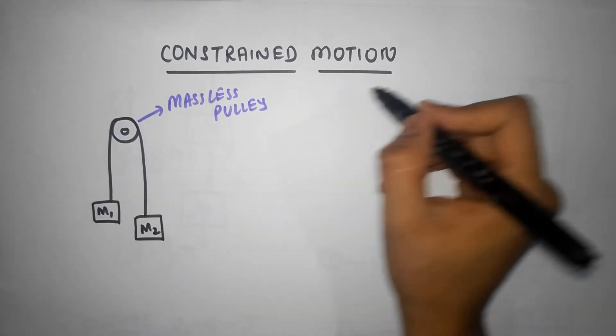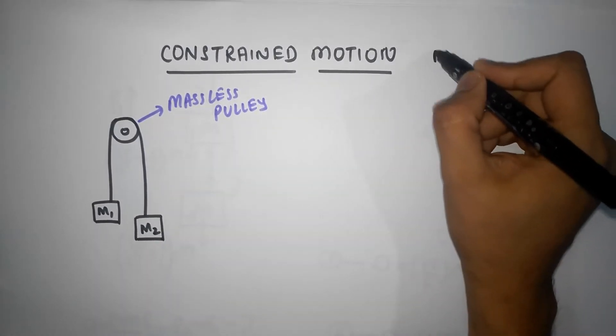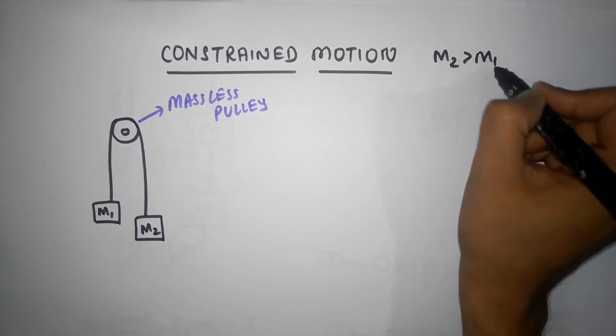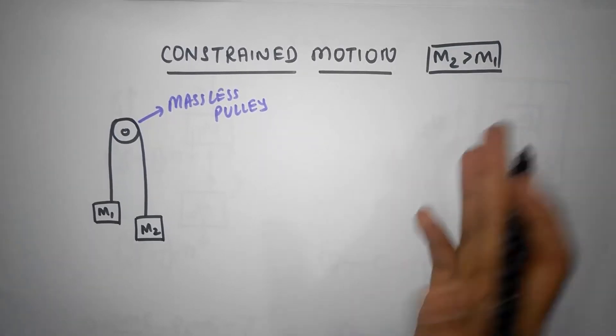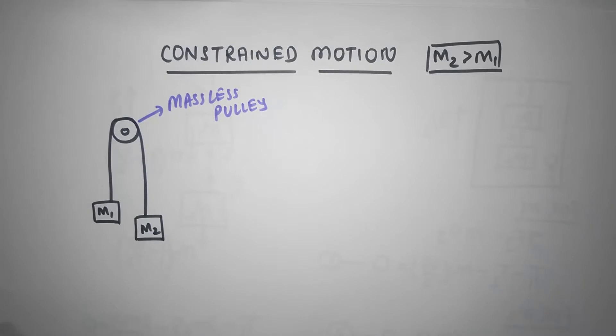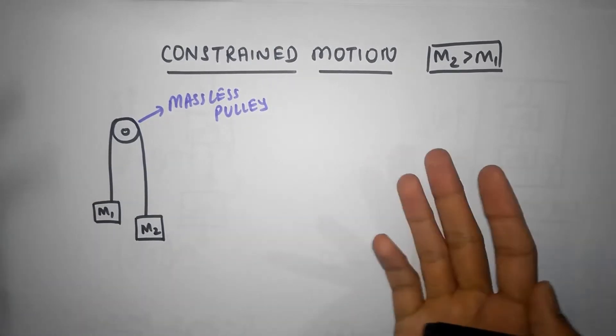For simplicity we can assume that M2 is greater than M1 so that we can get some intuition behind it, but that's not a necessary condition. Now my question is if I release this system, what's going to happen?